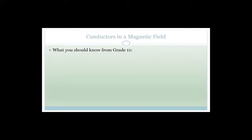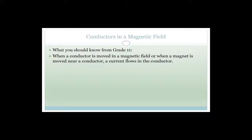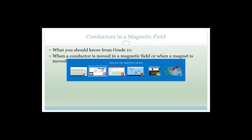When we're talking about conductors in a magnetic field, we're talking about a wire that is moving. You can either take a piece of wire and move it in a magnetic field, or - usually an easier thing to do - take a magnet and move it near a conductor.